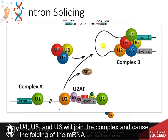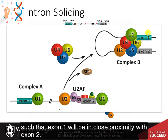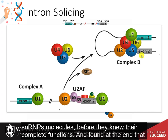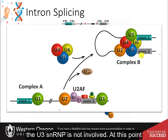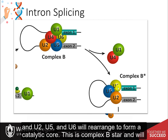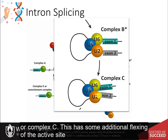U4, U5, and U6 will join the complex and cause the folding of the messenger RNA so that exon 1 will be in close proximity with exon 2. There is no U3 SNRNP involved with this process — researchers likely identified the SNRNP molecules before knowing their complete functions. At this point U1 and U4 will dissociate from the complex, and U2, U5, and U6 will rearrange to form a catalytic core, known as complex B*.